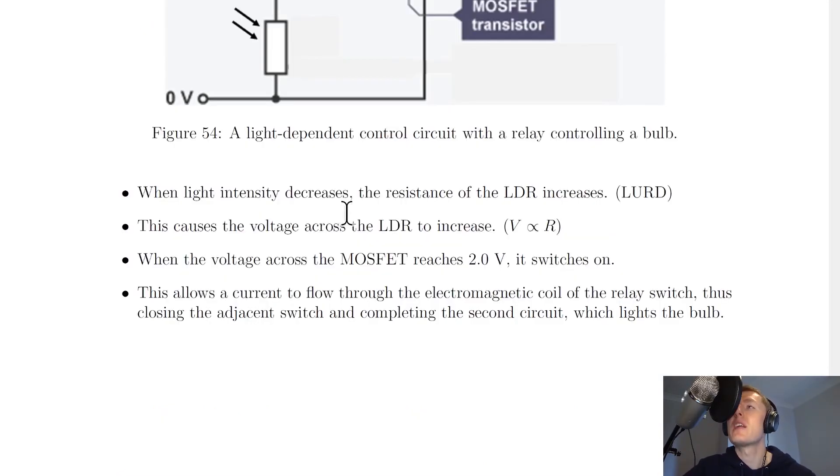So here's the steps and how this specific example of the control circuit works. So when light intensity decreases, the resistance of the LDR increases. So remember that's because of the opposite of lured—light down, resistance up. So light goes down, so the resistance of the LDR goes up. So this causes the voltage across the LDR to increase.